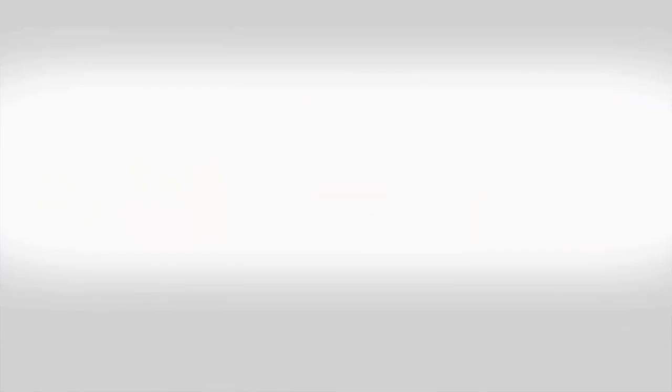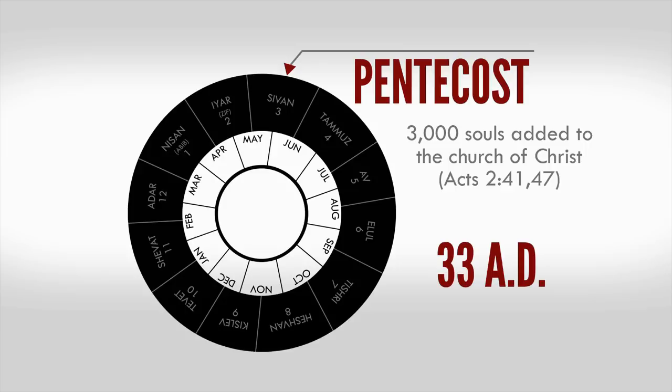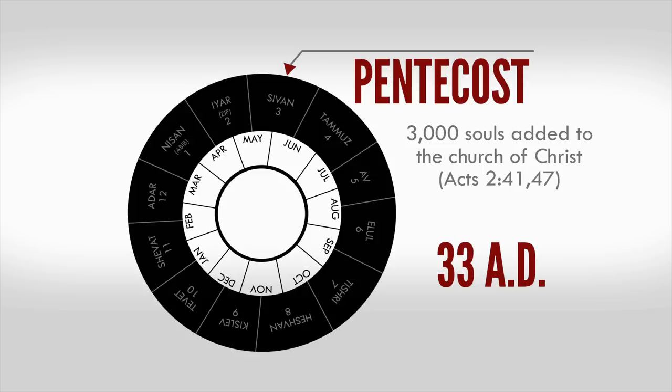This will put us in the third month of the Jewish calendar, or Sivan, according to Esther 8:9, which is around our early to mid-May. It is on this day in 33 AD that Christ will add around 3,000 souls to the church that he built, Acts 2:41 and 47. From here we will divide Luke's Acts of the Apostles and history of the early church into six blocks of time.